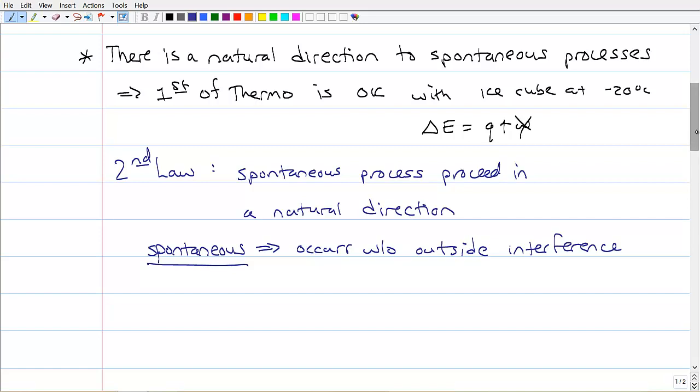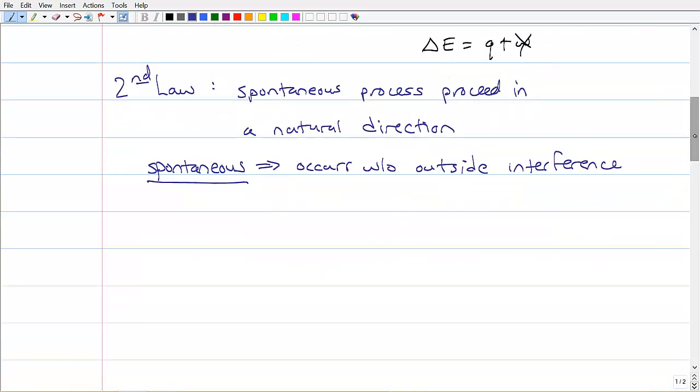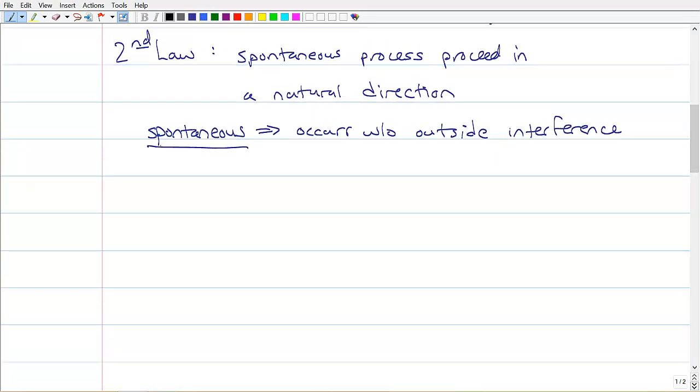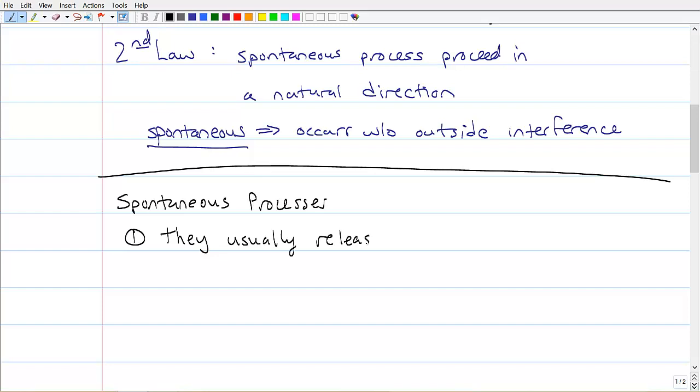So let's talk about a few things that have been observed about spontaneous processes for a long time. And it goes like this. Spontaneous processes, they tend to be, one, they usually release energy. Now, that just means they're exothermic in general, but it doesn't mean that they're always, because this word usually is important.